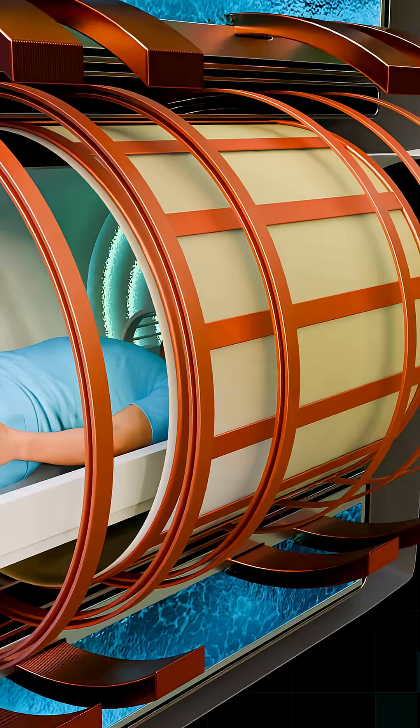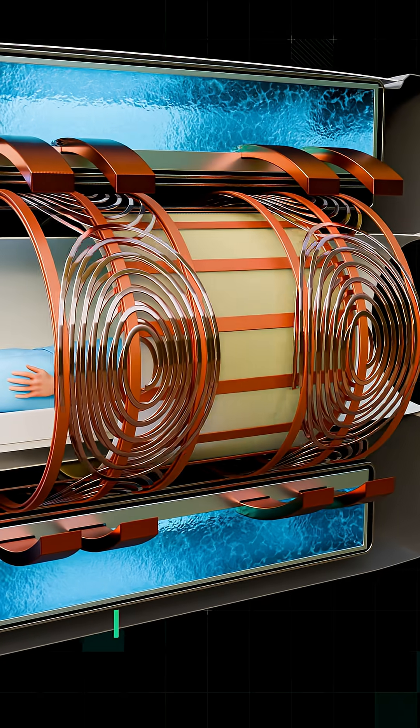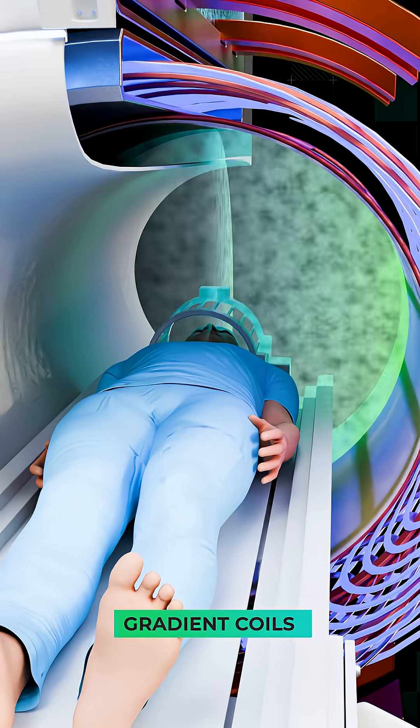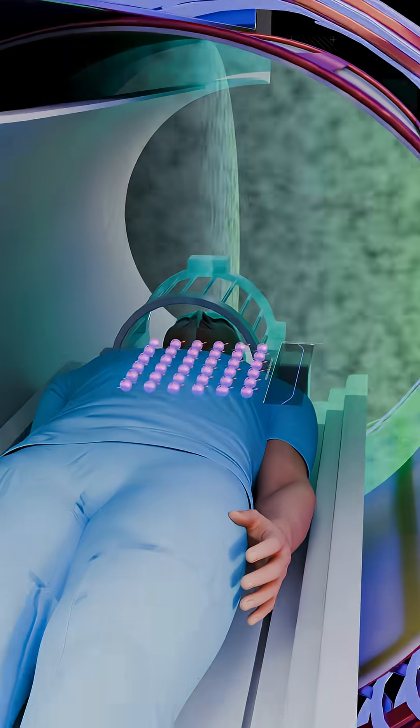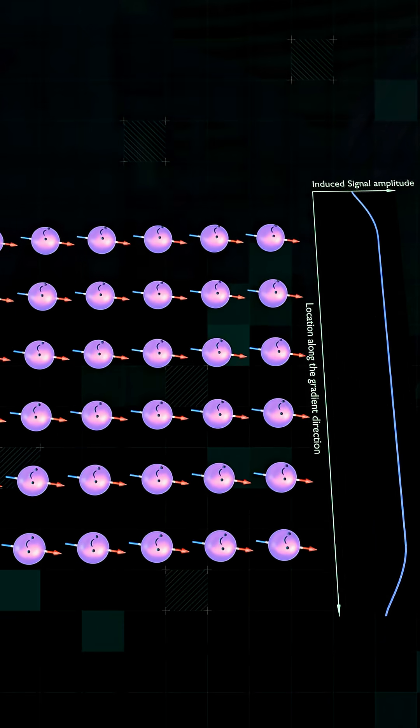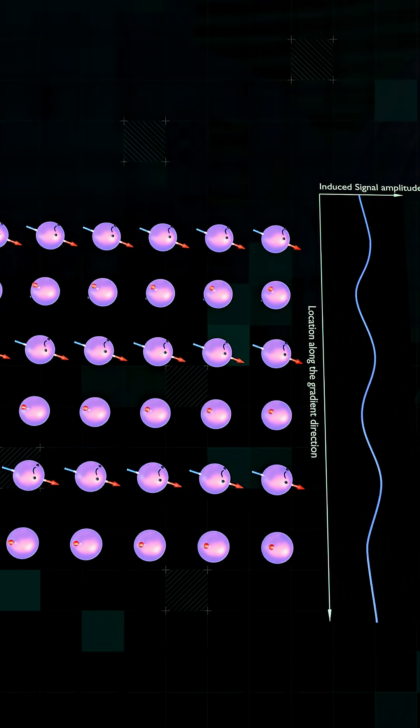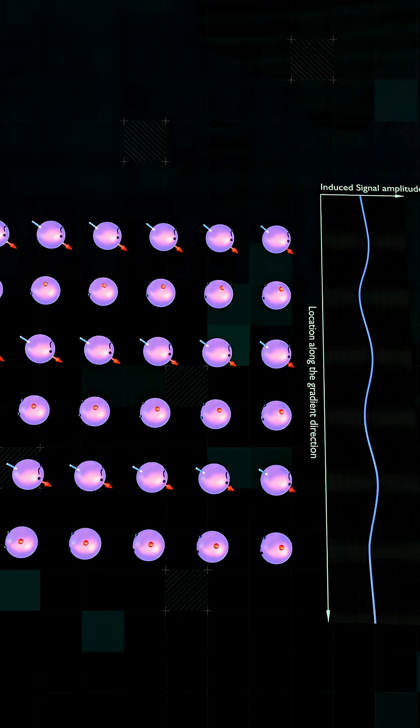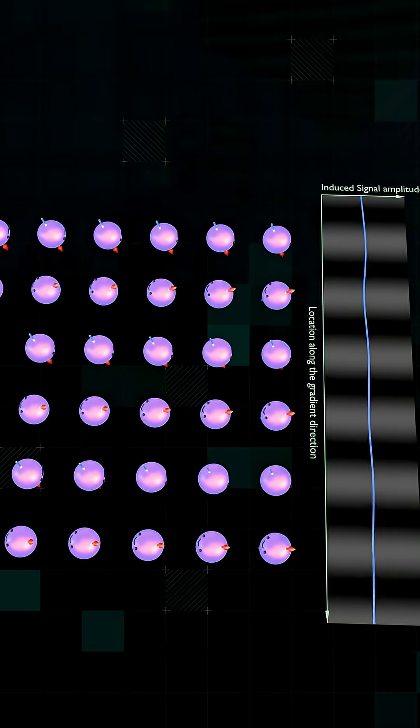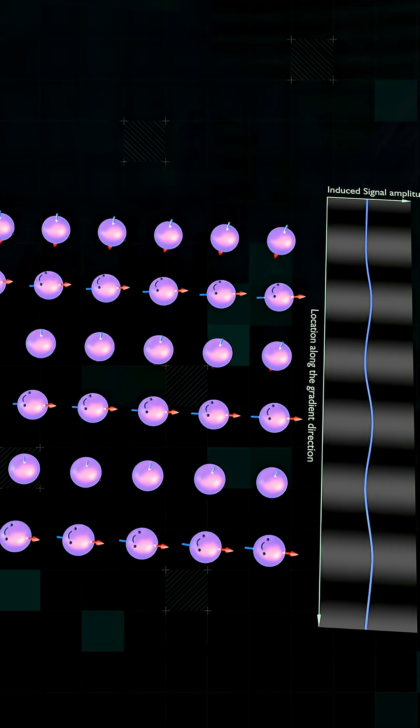To deal with this, these large spiral coils are activated. They create tiny variations in the magnetic field. They make protons in different parts of the body wobble at slightly different phases. This transforms the signal into striped patterns, black and white bands that encode spatial information.